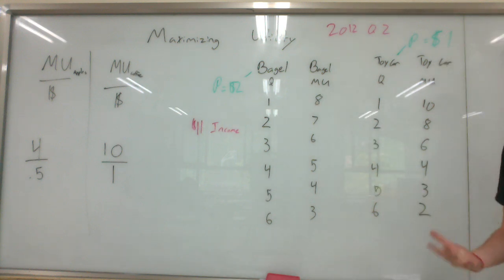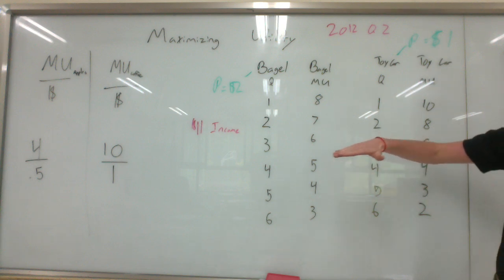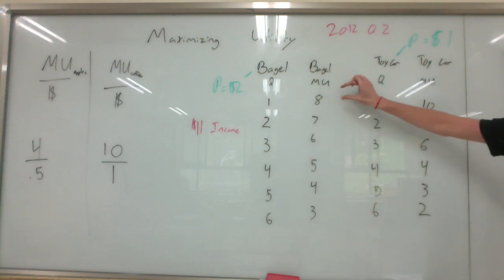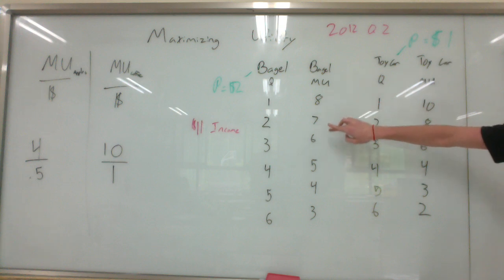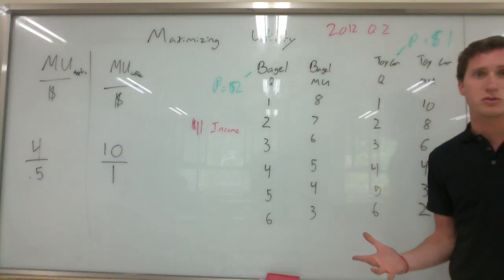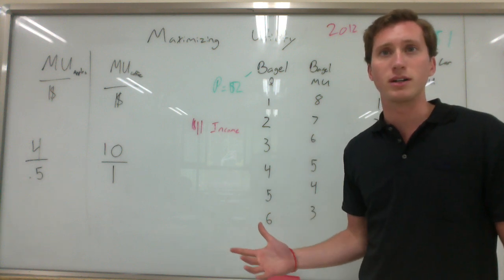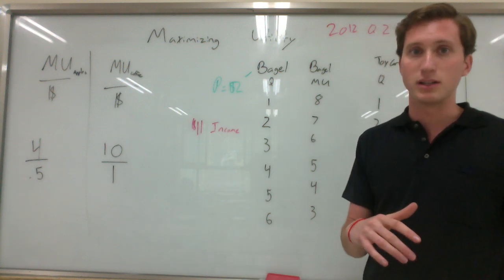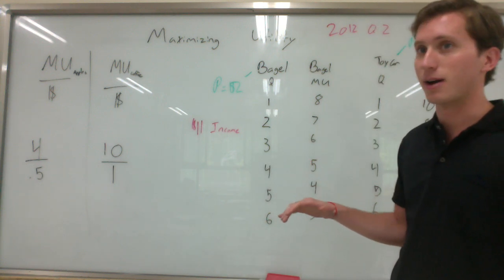From here we could figure out, I think the question might have been, what is the total utility from, let's say, three bagels? Well, the total utility, you've got to add up the marginal utility. So eight plus seven plus six is equal to 21. The total utility of consuming three bagels is 21 utils. That would be the correct way to think about it.